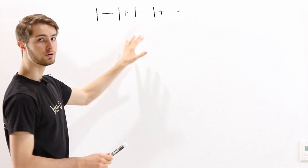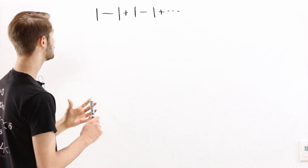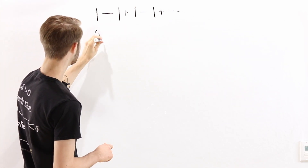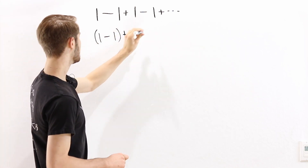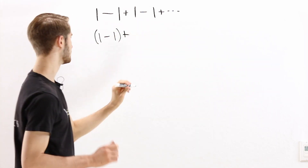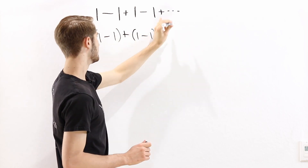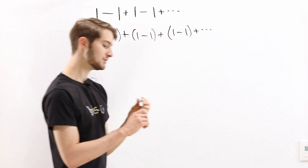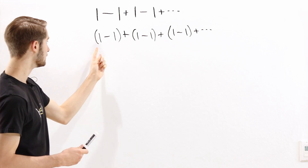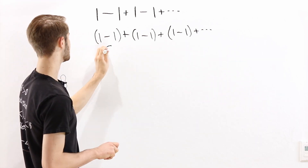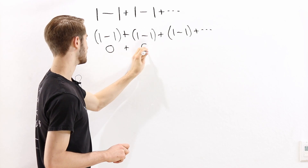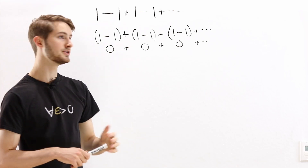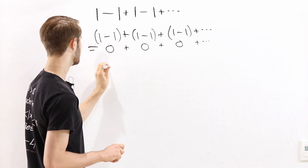One way that we can approach finding the value of this sum is grouping the terms. So I can look at this 1 minus 1 right here and put that in parentheses. And then after that we'll have another plus 1 minus 1 in parentheses as well. And after that we would have a plus 1 minus 1 again, and we can keep doing that to infinity. Now 1 minus 1 is just equal to 0, so each group is 0, and we are just adding up infinitely many zeros. That means the answer is just 0.